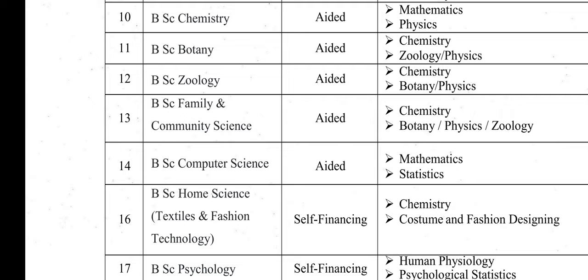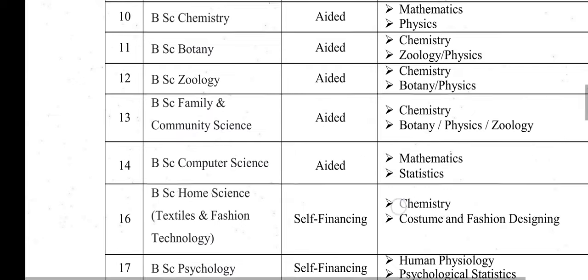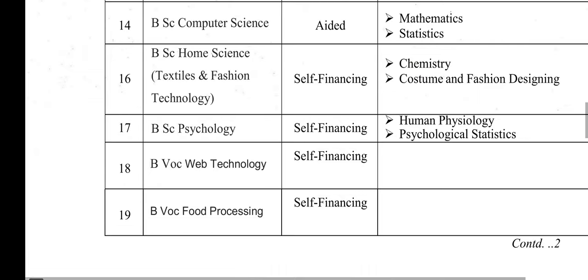BSc Computer Science has maximum strategies and complementary courses. There is also BSc Web Technology and BSc Food Processing available.